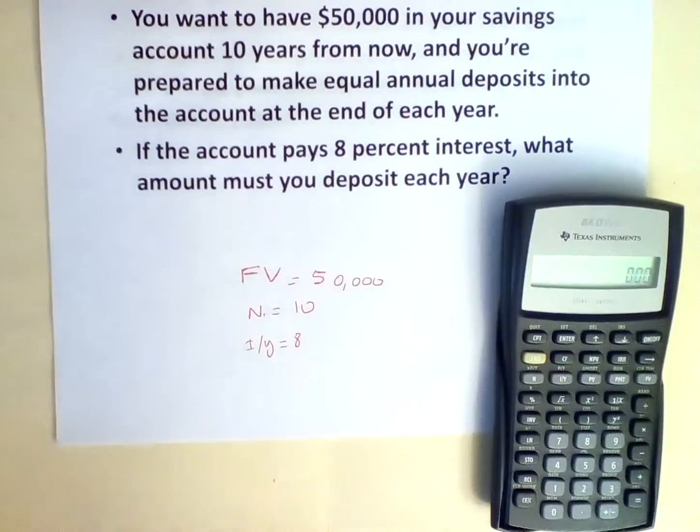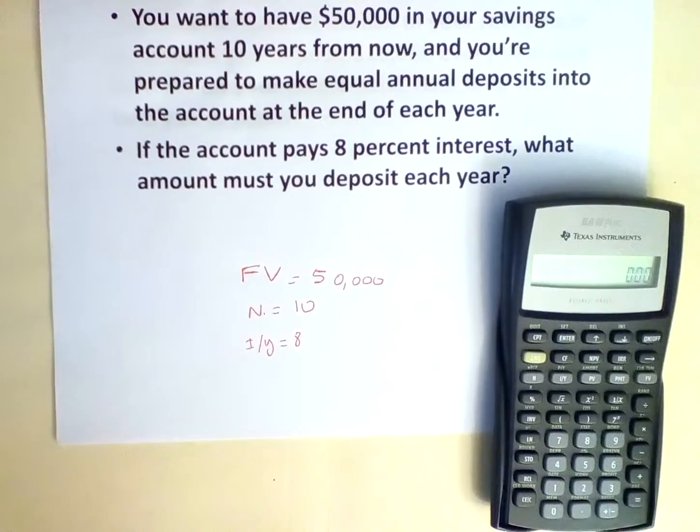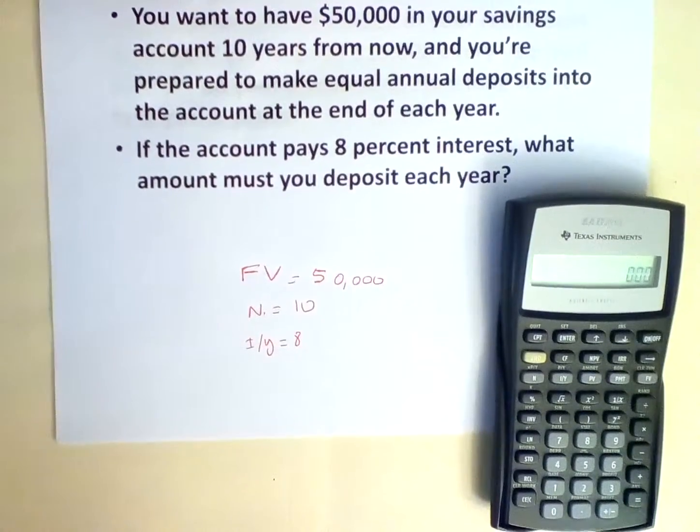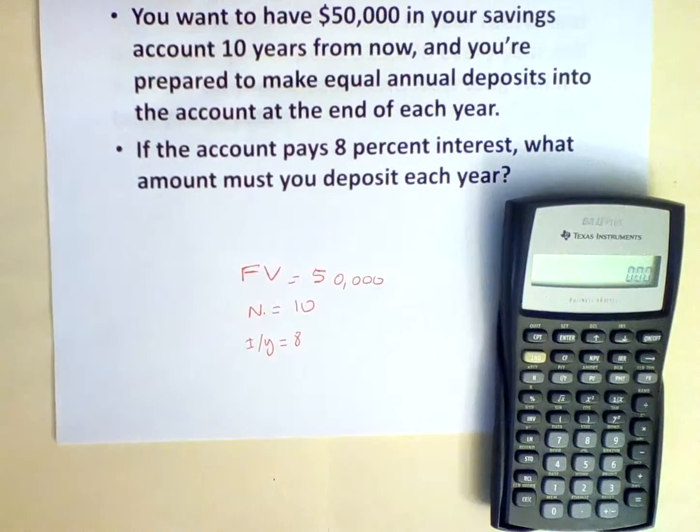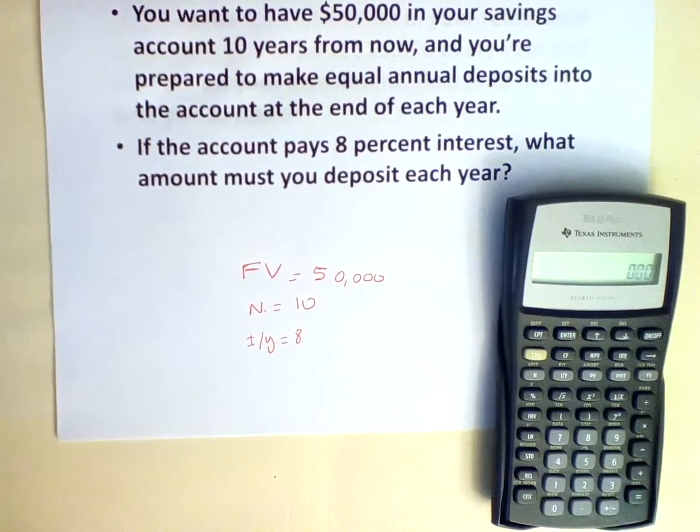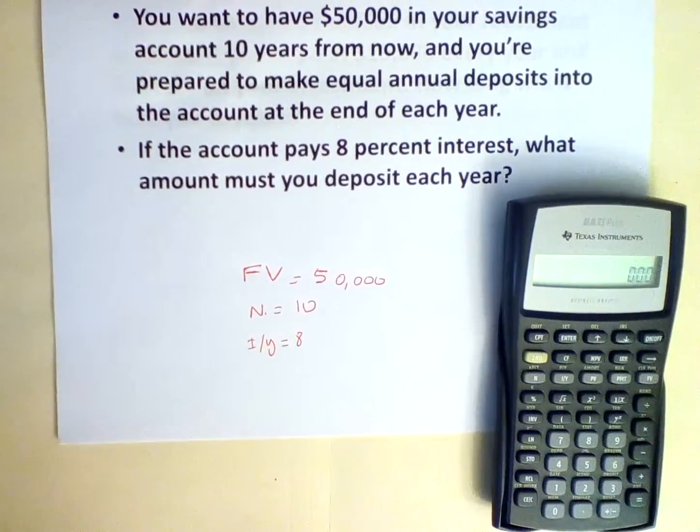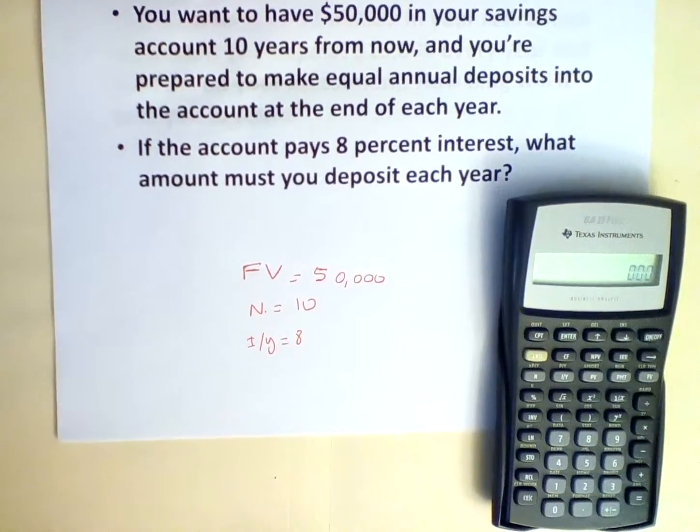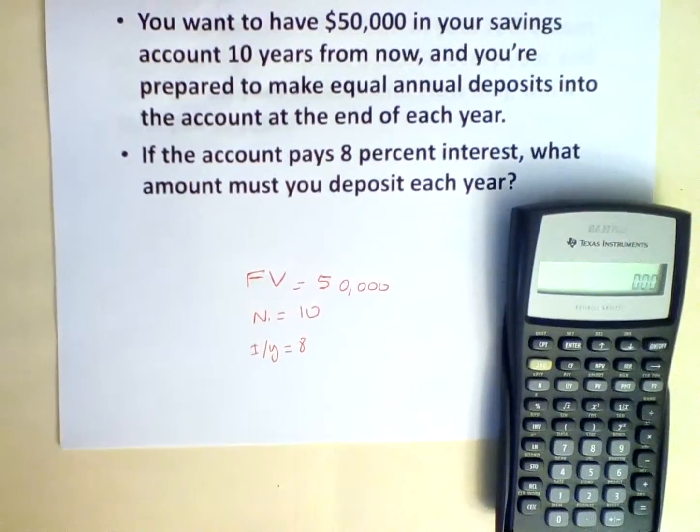We want $50,000 in 10 years, so FV or the future value is $50,000. We are investing for 10 years, so N equals 10 and we earn an interest of 8%, so I over Y is 8.